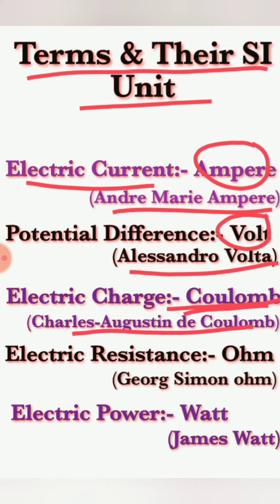The next term is electric resistance. We know Ohm's law — the concept of resistance was developed by George Simon Ohm, and in his honor, the SI unit of electric resistance is named the ohm.